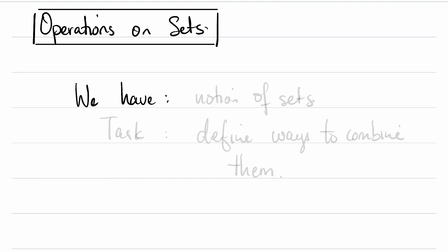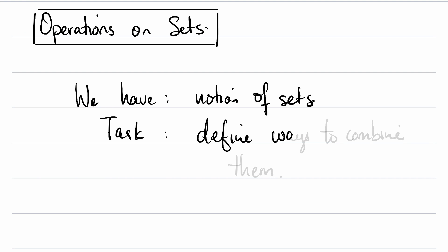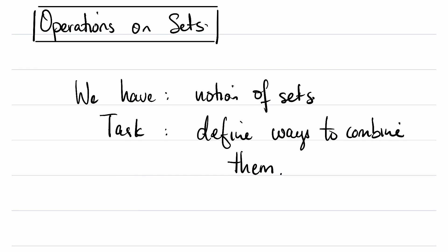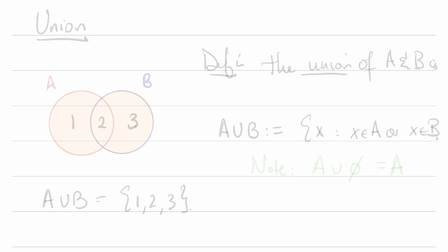Now that we have a notion of sets, our task today is to define ways to combine them — so in particular, is there an analogue of addition for sets, etc. For what follows, it'll be really helpful to have a good visual grounding for the things we're talking about, so we're going to be using Venn diagrams to represent these various operations on our sets.